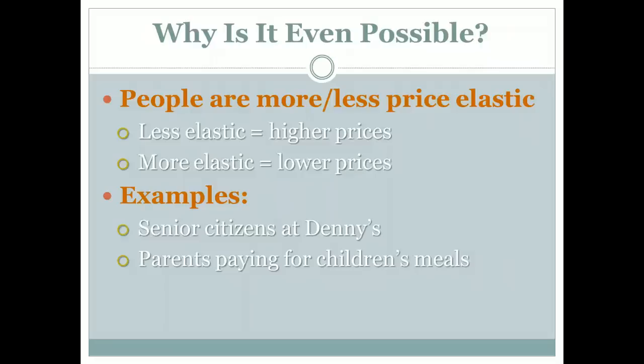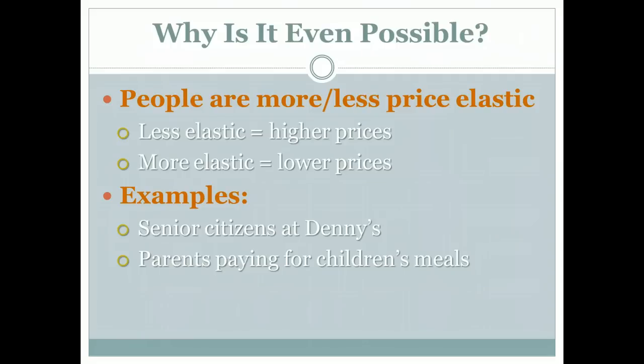An example would be senior citizens at Denny's — they want to eat but they don't want to spend a whole lot; they're very elastic with their demand. So they command a lower price than college students or families with small kids. Parents with little kids are going to be a little more elastic too, in the sense that they have a budget of some sort. Their willingness to pay will dictate whether or not a monopolist can charge a different price for a different group.